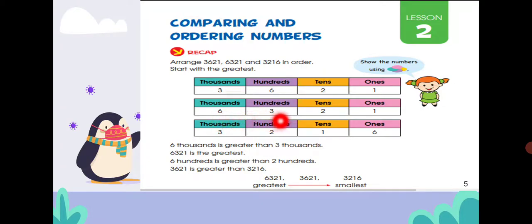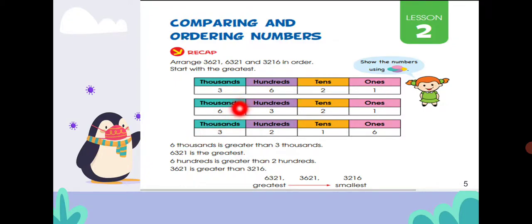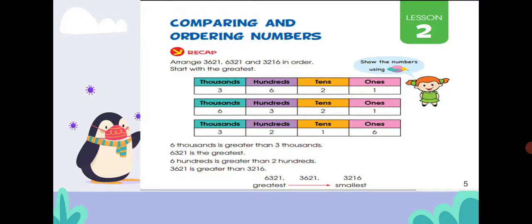So 6321 is our greatest number. Now we compare 3621 and 3216. Six hundred is greater than two hundred, so three thousand six hundred and twenty one is greater than three thousand two hundred and sixteen.